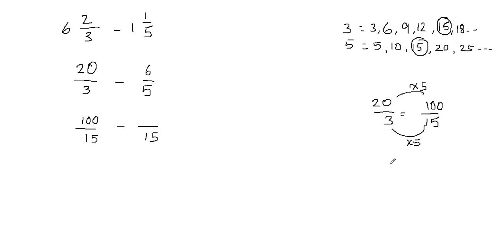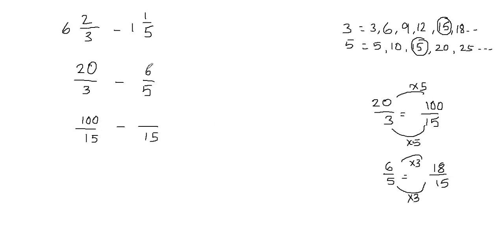The same process we repeat with 6 fifths. My new fraction's denominator should be 15. How do I get from 5 to 15? I multiply the denominator by 3. If I multiply the denominator by 3, I must also multiply the numerator by 3. So 6 times 3 gives me 18. Therefore 6 fifths equals 18 over 15. I replace 6 over 5 with 18 over 15. Now I have the same denominators and can subtract.